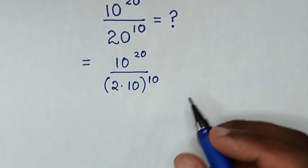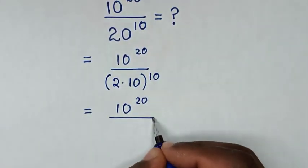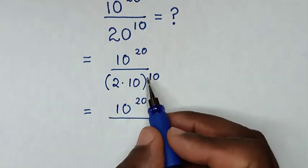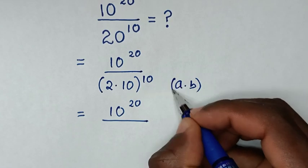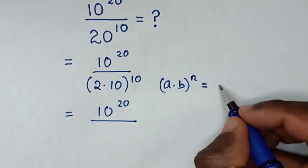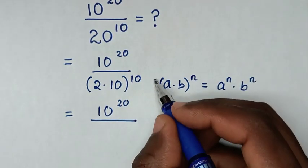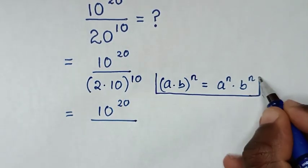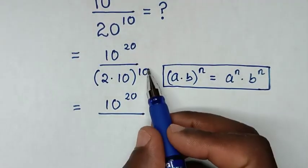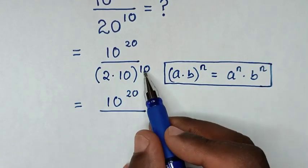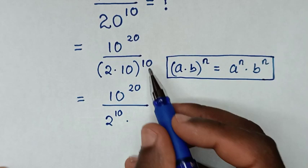Then in the next step, it will be equal to 10 power 20, over — in here, the denominator is in the form of (a times b) bracket power of n, which is equal to a power of n times b power of n. So we'll take this power of 10 inside the bracket: it will be 2 power of 10 times 10 power of 10.